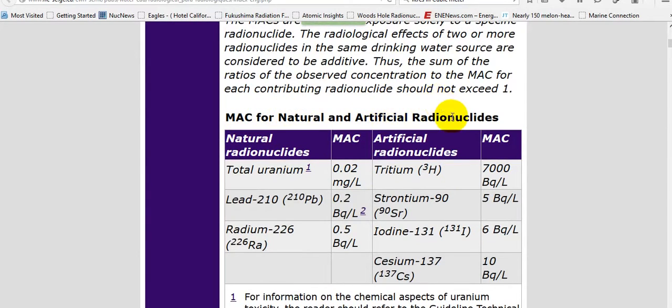Natural and artificial radionuclides. So natural, you can see 0.2 of a becquerel a liter, 0.5, half a becquerel per liter. Tritium, which is man-made. Strontium-90 is man-made. Iodine-131 is man-made. Cesium-137 is man-made. They're artificial. They call them artificial, not man-made, but they're man-made in a chain reaction.